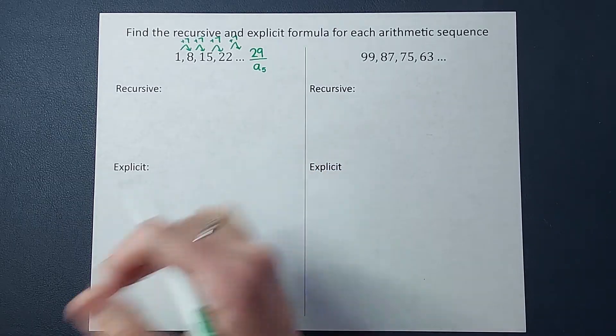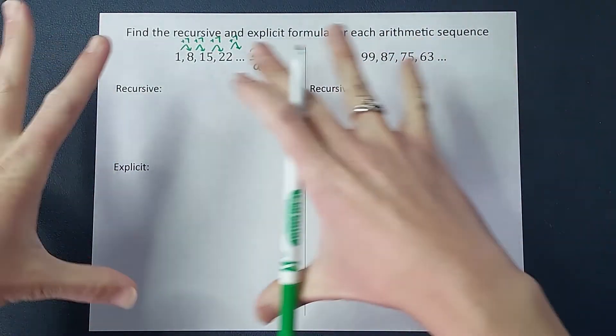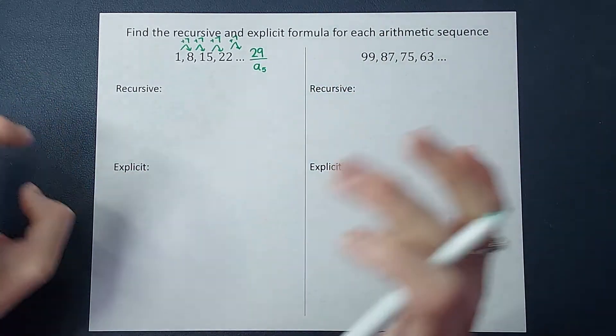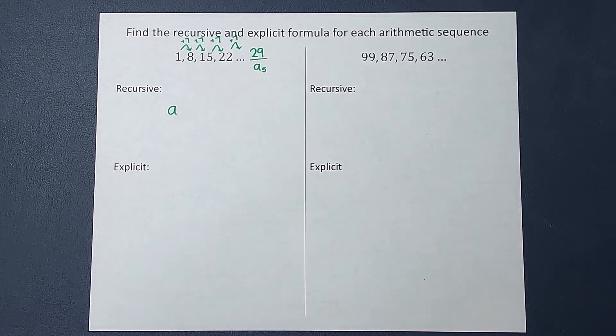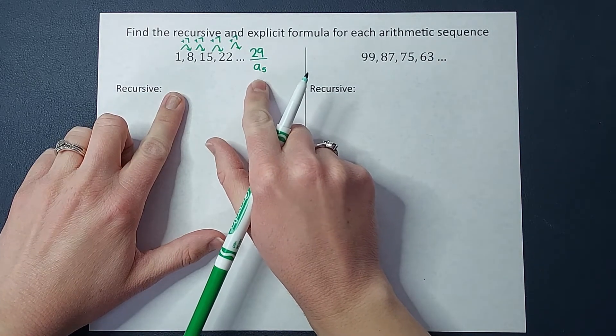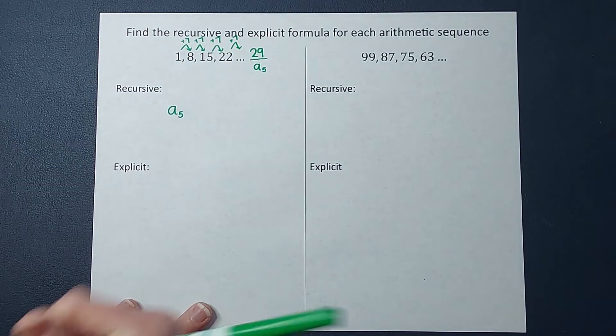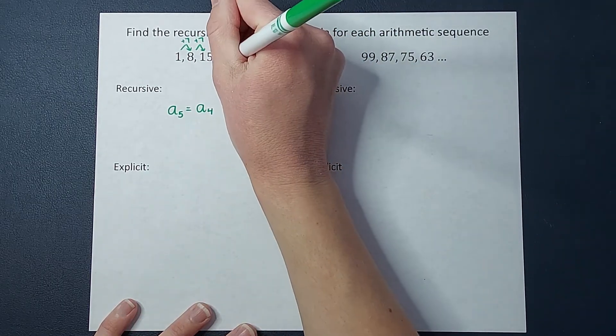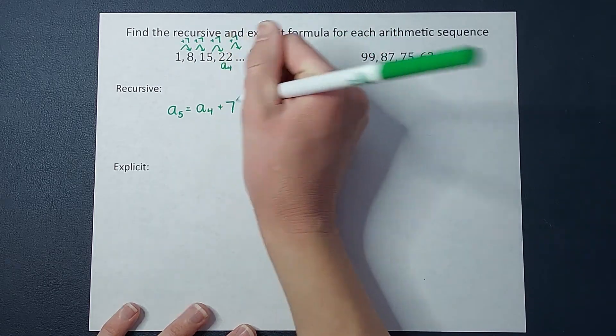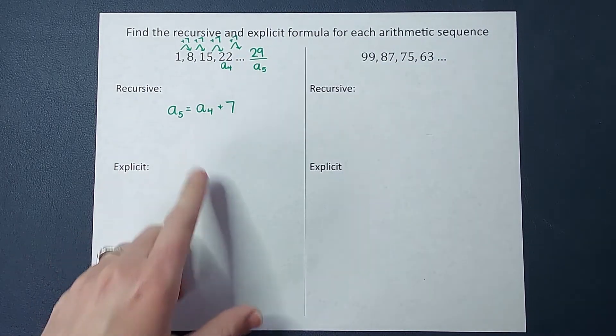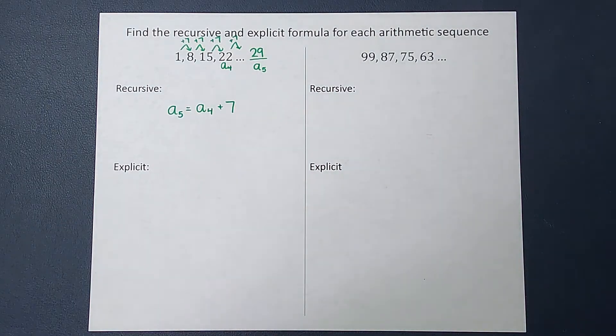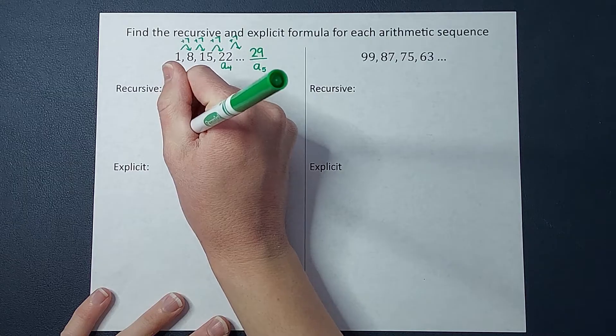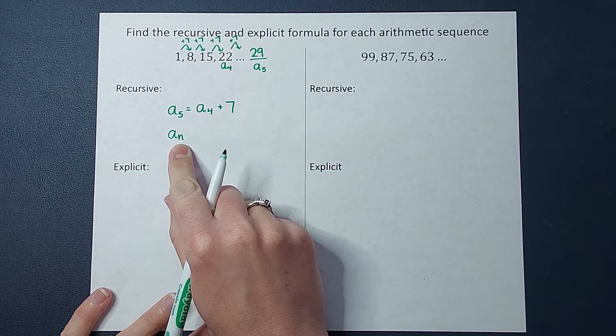But this is math and we want to write it in math terms. We don't use all those words usually in math. We want to use a formula to represent that. So this is where our a sub n and stuff comes in. If I were to write in math language what I just did to find this a sub five, I would say to find a sub five, all I did was take a sub four, the one before it, this is a sub four, and I added seven. Isn't that a mathy way to write that? But we want people to be able to plug in whatever they want, not just five.